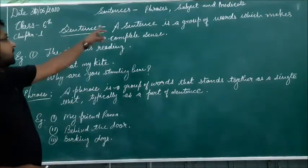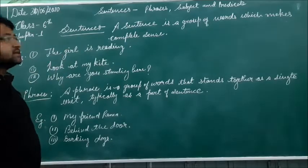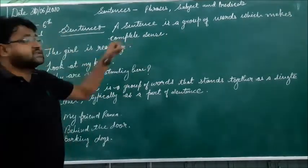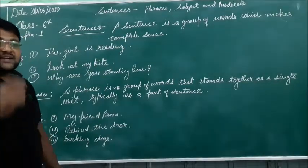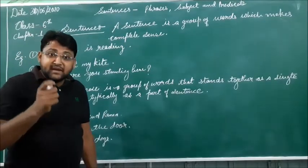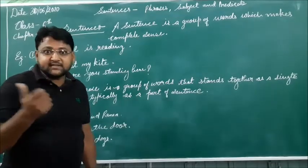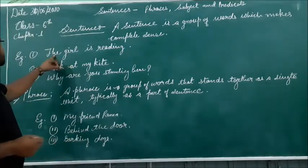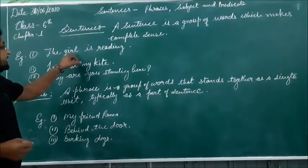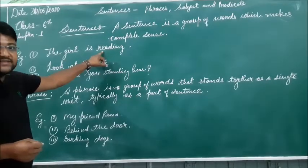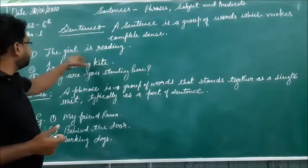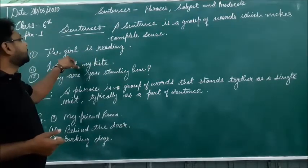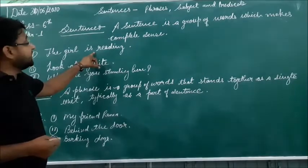So first of all, what is a sentence? A sentence is a group of words which makes complete sense. So a sentence is a group of words and it makes a complete sense. The first example is 'The girl is reading.' This sentence has four words and it gives a complete sense.